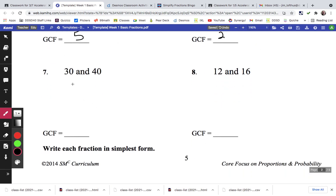So 30 and 40, the factors of 30 are 1, 2, 3, 5, 6, 10, 15, and 30. The factors of 40 are 1, 2, 4, 5, 8, 10, 20, and 40.